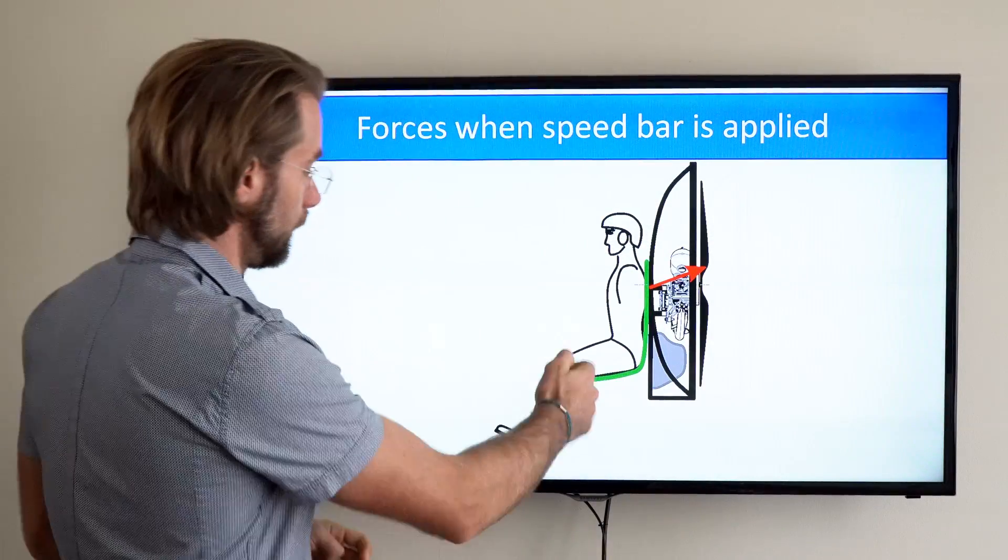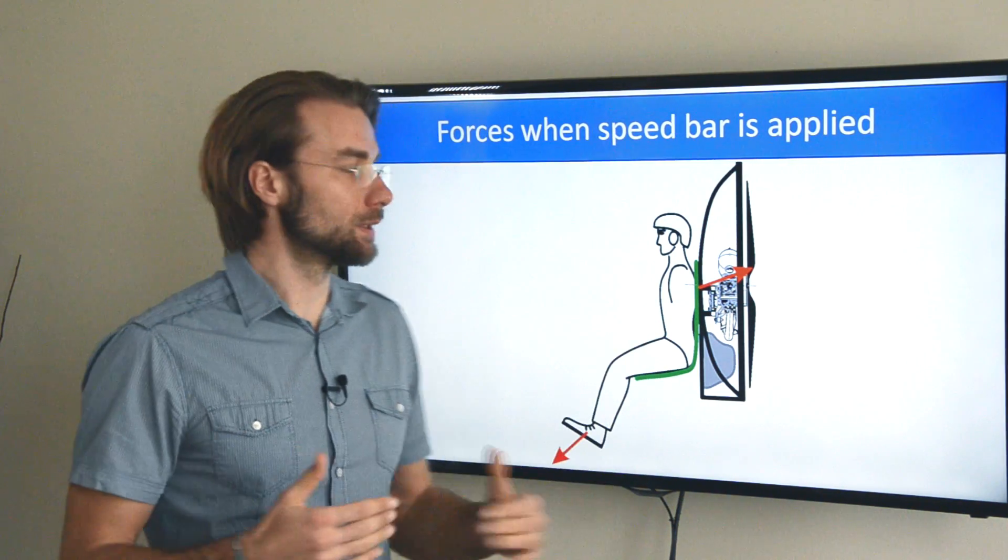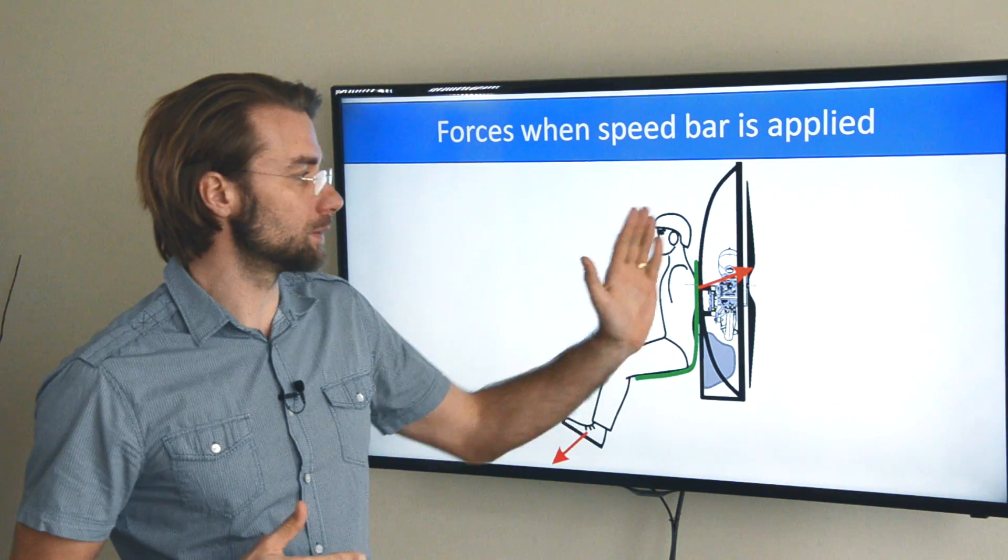So now when you push the speed bar you obviously apply force with your feet on the speed bar, but then you need to find some support. That is you lean with your upper body, with your upper back against the paramotor.